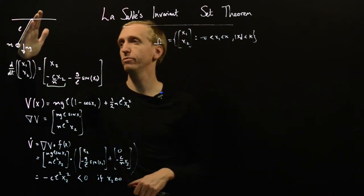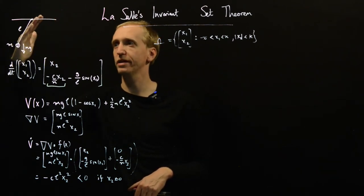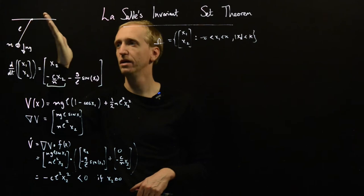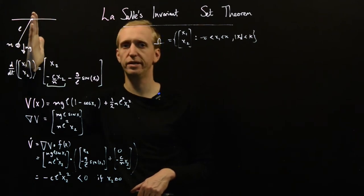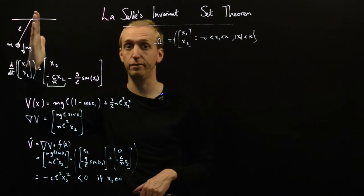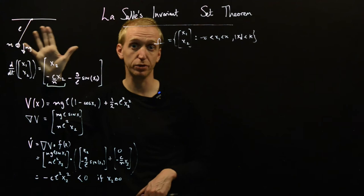So we've got a pendulum, but now we've got some damping. So with no damping, it would just oscillate backwards and forwards like this forever. But with some damping, every time it loses a little bit of energy, eventually it's going to settle down and be still. So this is a system that we would expect to be asymptotically stable.